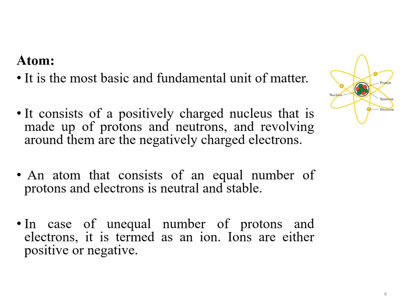An atom is the smallest particle of an element. It is the most basic and fundamental unit of matter. It consists of a positively charged nucleus made up of protons and neutrons, with negatively charged electrons revolving around them. An atom that consists of an equal number of protons and electrons is neutral and stable. In the case of an unequal number of protons and electrons, it is termed an ion. Ions are either positive or negative.